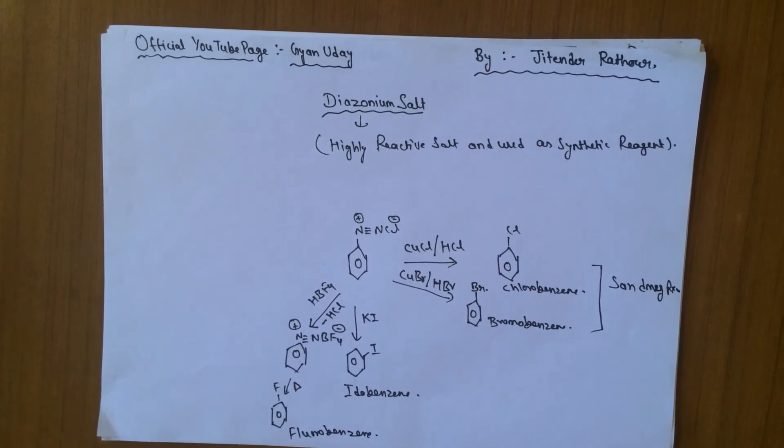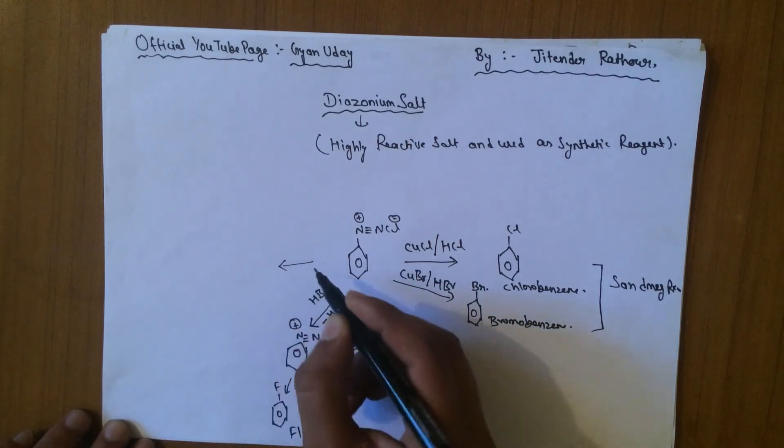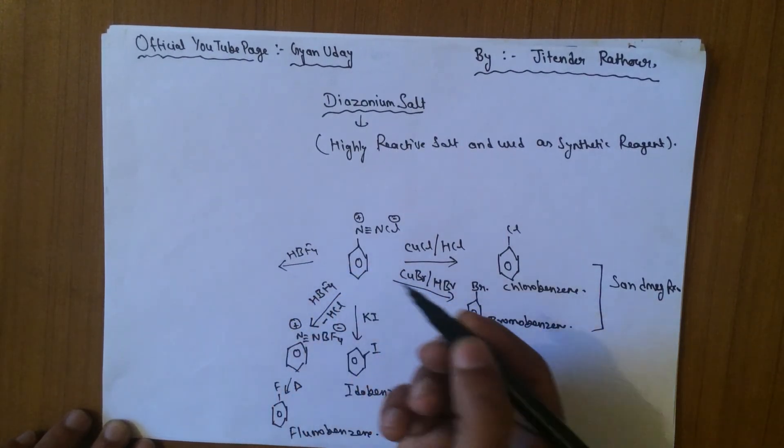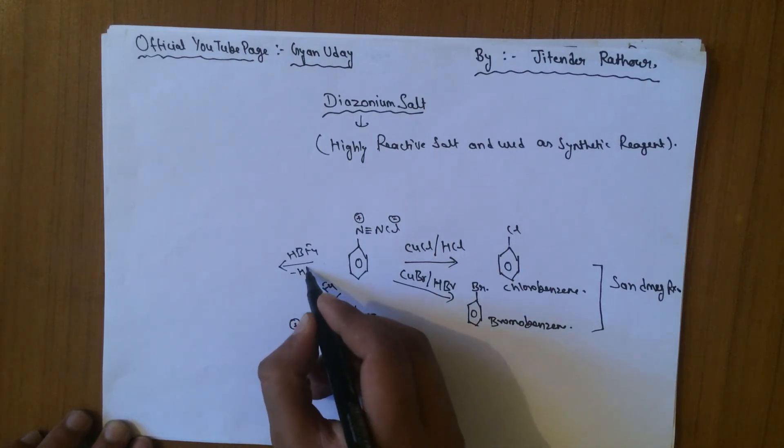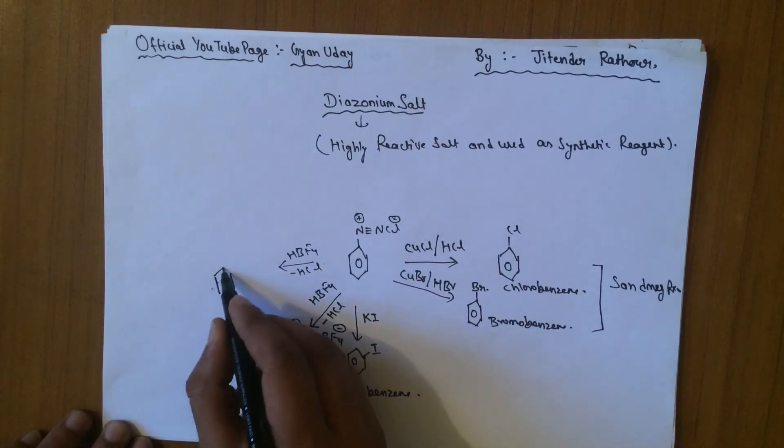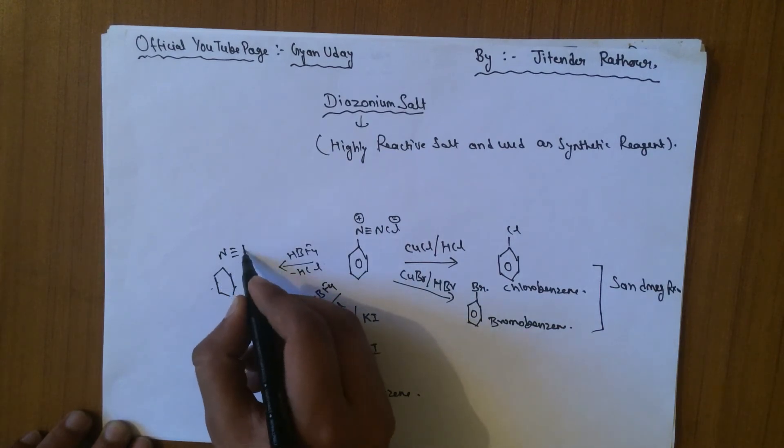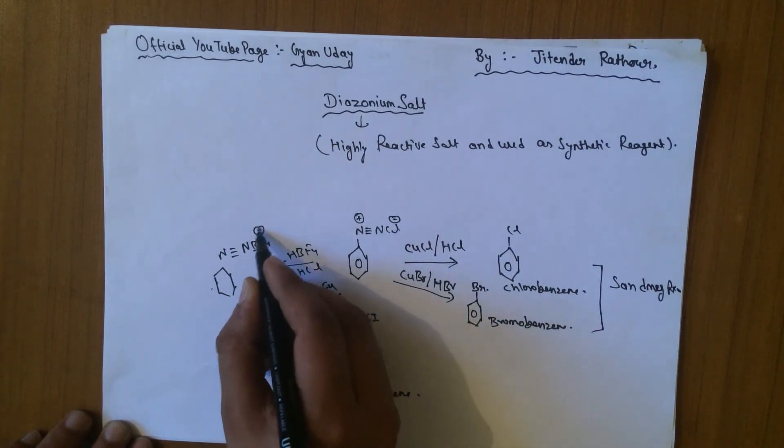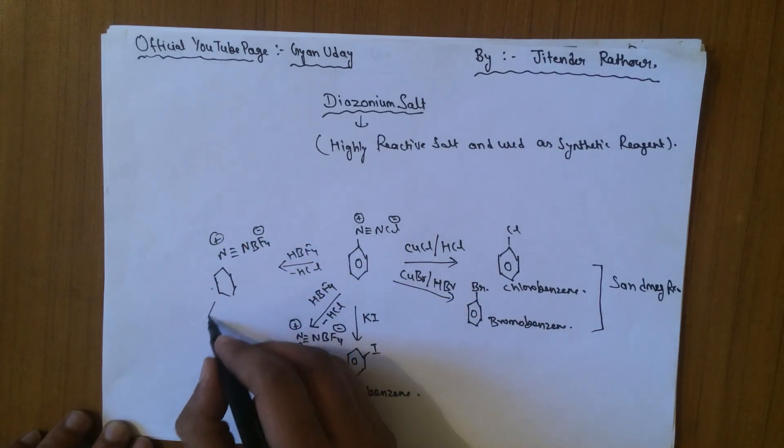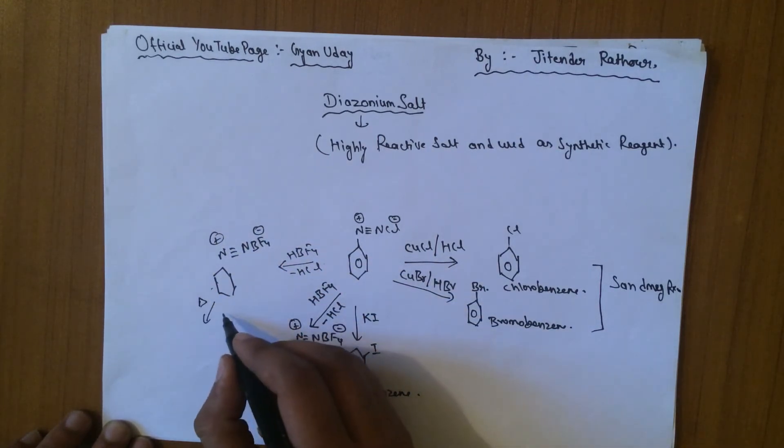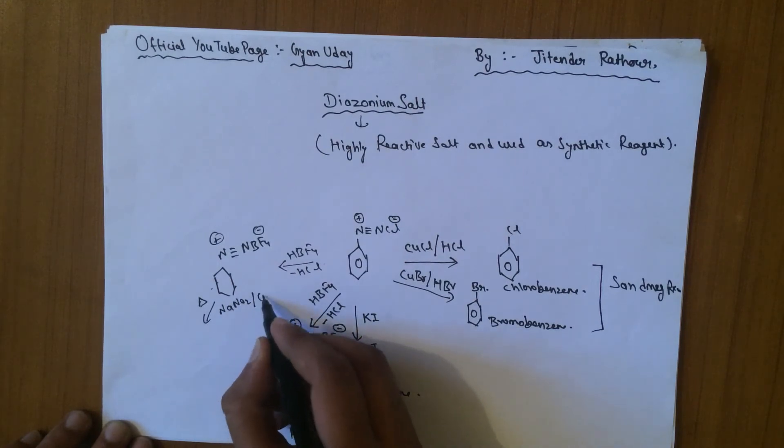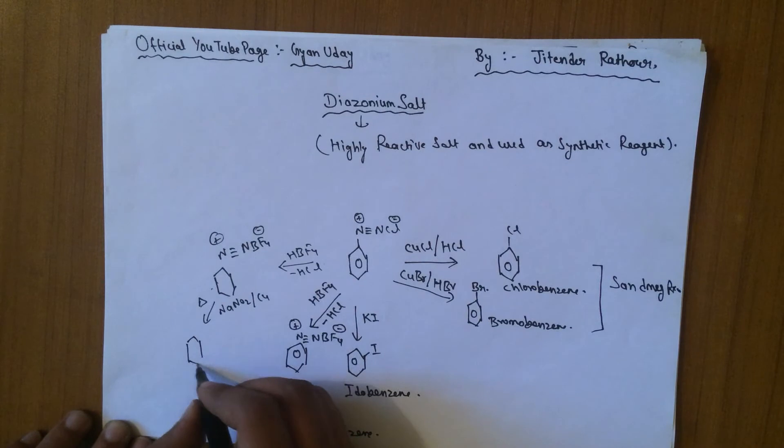Now another reaction of diazonium salt is in presence of HBF4 and NaNO2. Here also the ejection of HCl occurs. The reaction product is negative on the fluorine and positive on the nitrogen, and after heating in presence of NaNO2 and copper, nitrobenzene is formed.